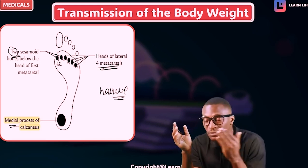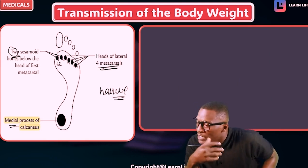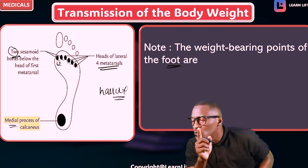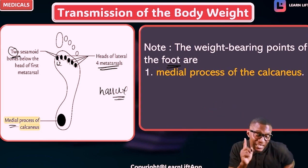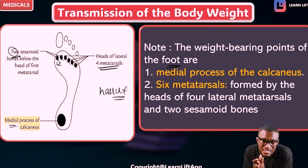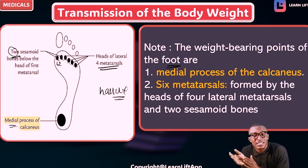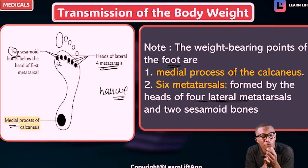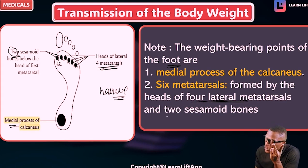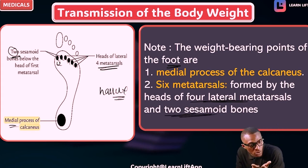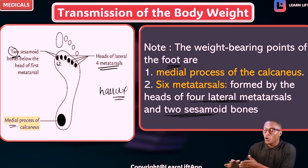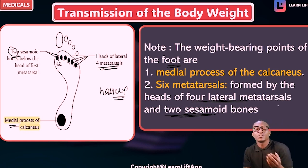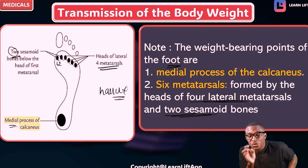The weight bearing points in the foot are: number one, the medial process of the calcaneus, and number two, the six metatarsal pillars. The six pillars are formed by the head of the four lateral metatarsals plus the two sesamoid bones of the great toe. The four lateral digits each give one pillar, making a total of six pillars.